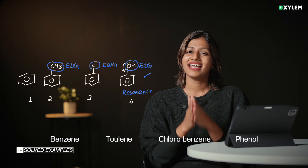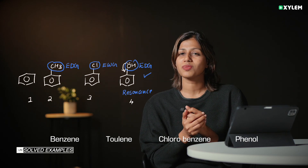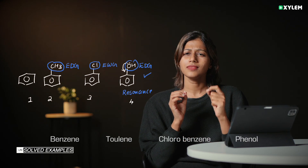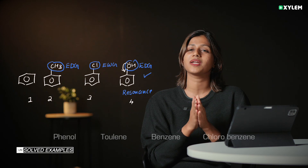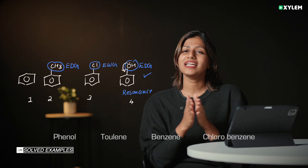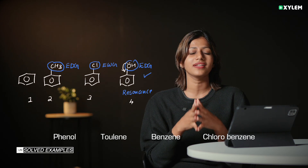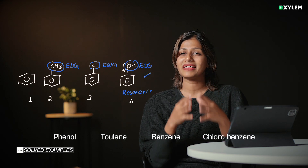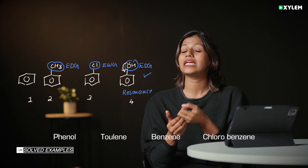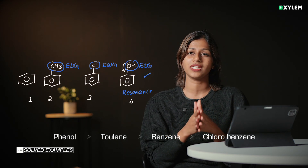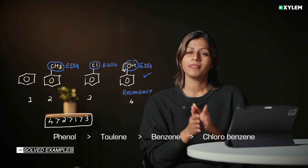How do we answer the question? The electron donating groups — phenol and toluene — increase reactivity, while chlorobenzene's electron withdrawing group decreases it. This is how you solve this example.